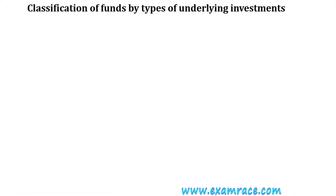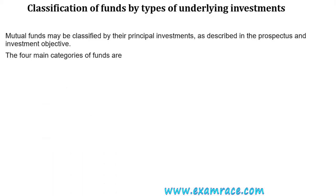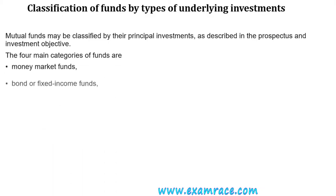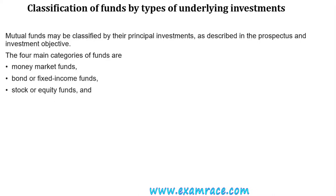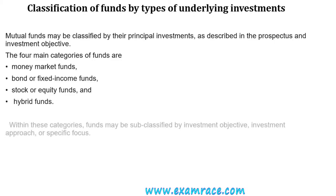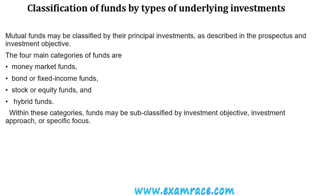Moving ahead, we have the classification of funds by types of underlying investments. Mutual funds can be classified by their principal investments. The four main categories are money market funds, bond or fixed income funds, stock or equity funds, and hybrid funds. Within these categories, funds may be sub-classified by investment objective, investment approach, or specific focus.